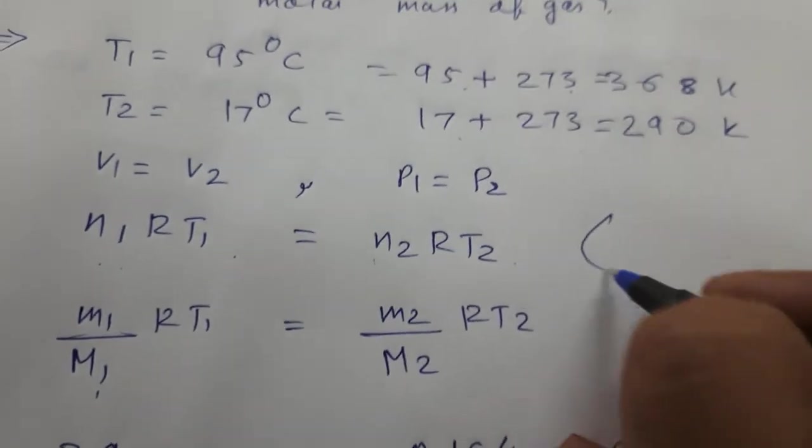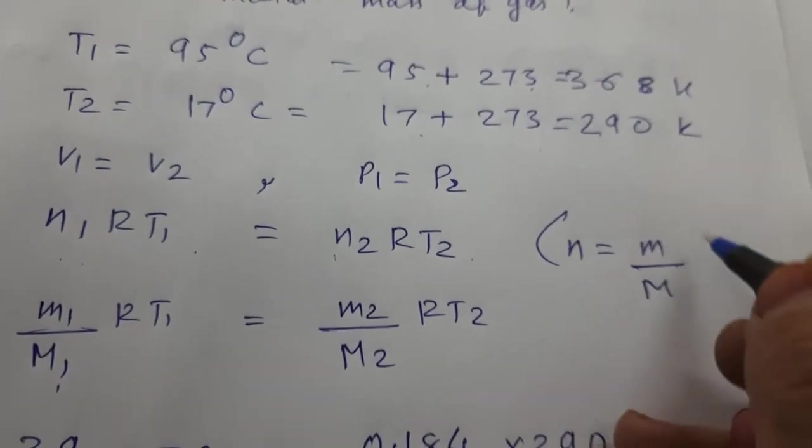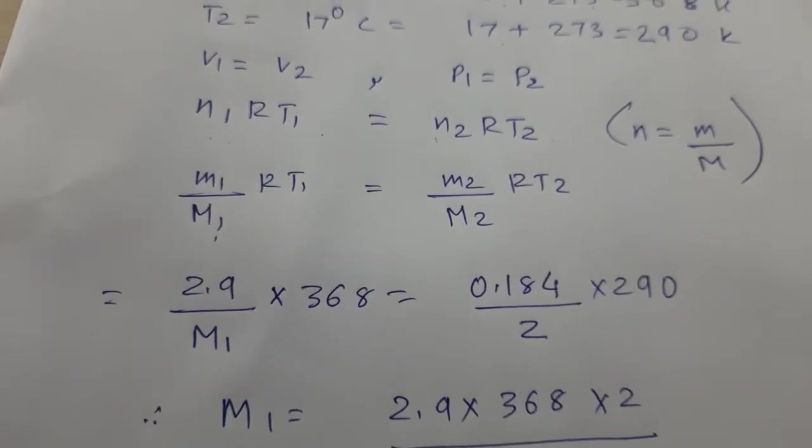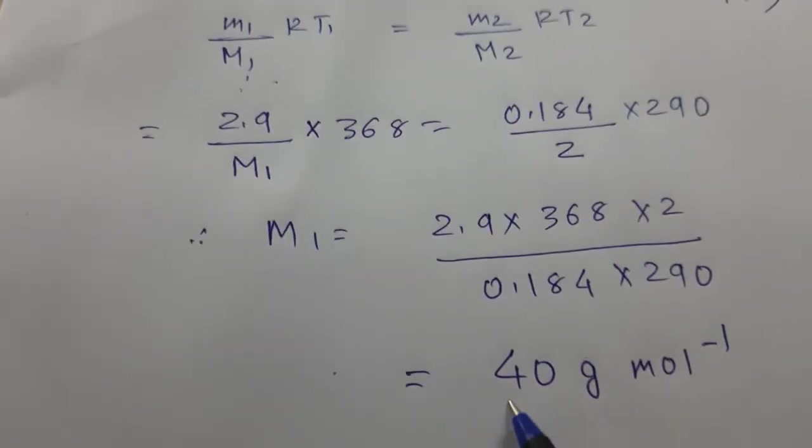The formula here: n equals, number of moles equals small m, mass given, upon molar mass. We have read this in the first chapter. So this we have to find out. Put all those values and find out M1.